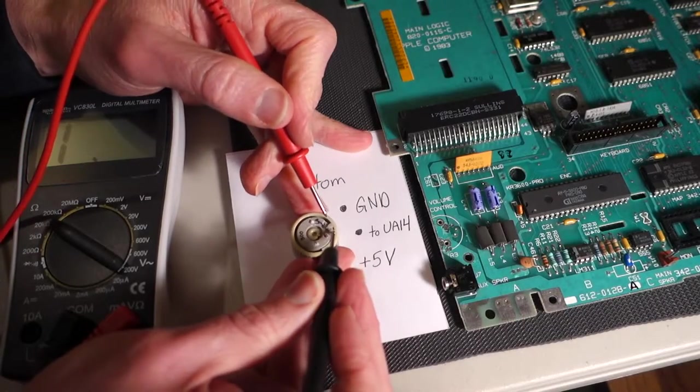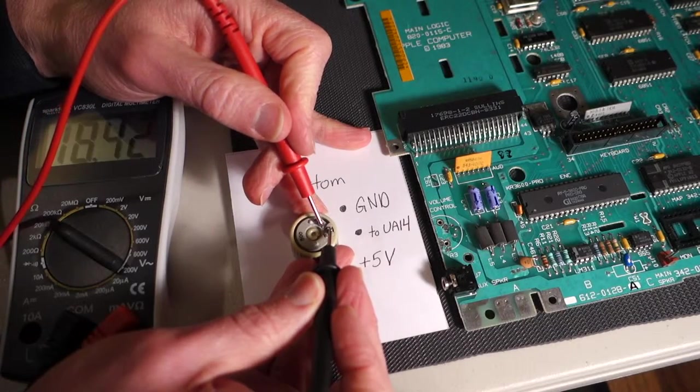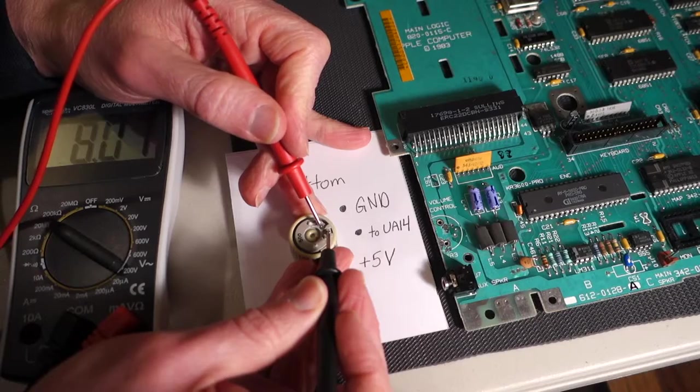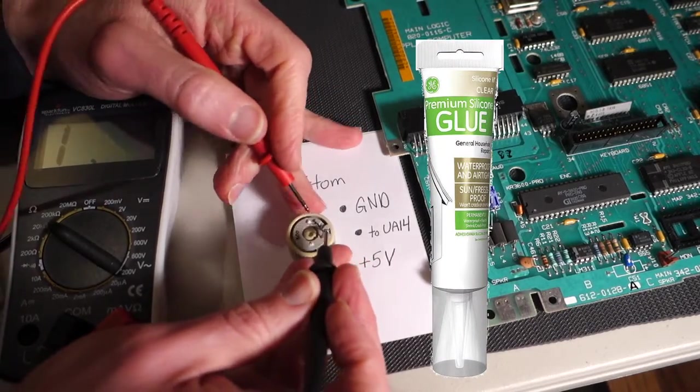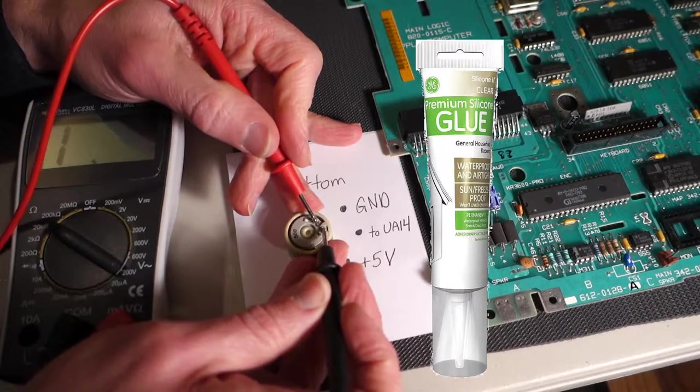A.J. Cohen over on the Apple II Enthusiast Group recommended GE silicone glue to glue the little ceramic nibs back in. And that should be it.